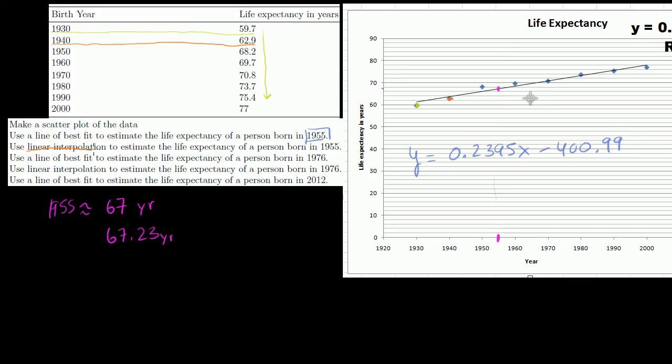Let's do the next part. Use linear interpolation to estimate the life expectancy of a person born in 1955. Now, linear interpolation means let's take the data points around 1955. So you have this data point from 1950, you have this data point from 1960.